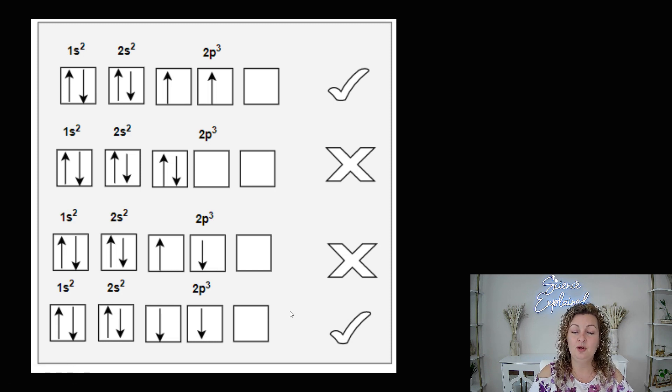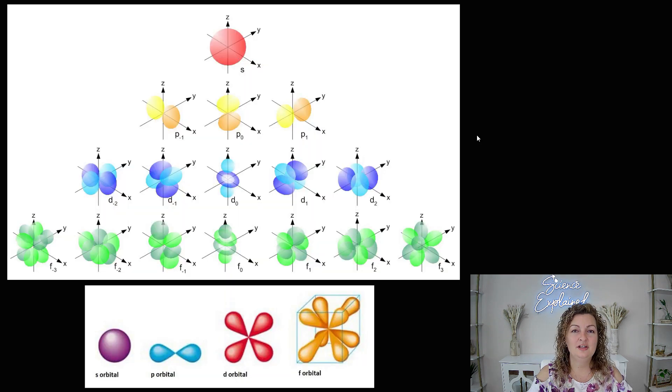So this would be a perfect example. You can do 1s2 just like this, 2s2, and then they chose to do down, down, and that is absolutely fine as long as you're sticking with the same direction for the entire way and then going to the opposite direction. So if I was to continue this, I would put my next electron down and then I would go up, up, up.